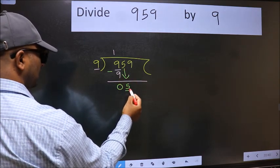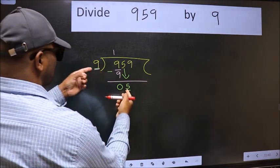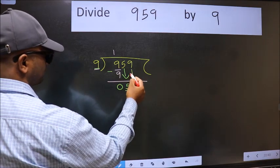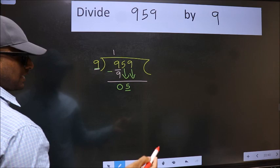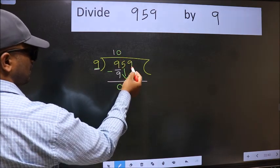Now here we have 5 and here 9. 5 is smaller than 9, so we should bring down the second number. And the rule to bring down the second number is we should put zero here, then only we can bring this number down.